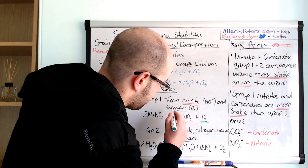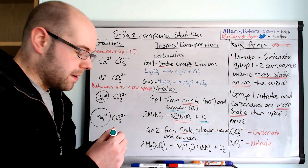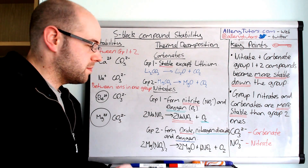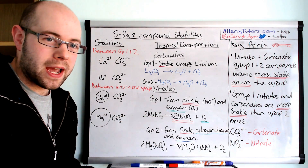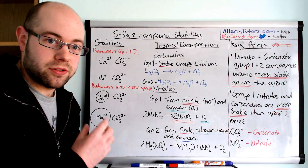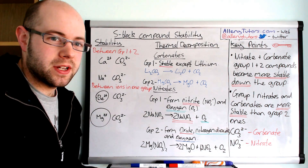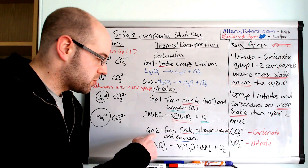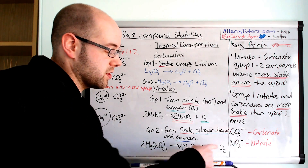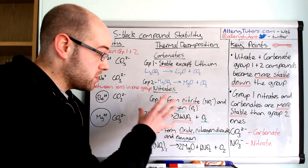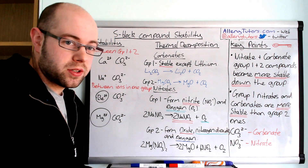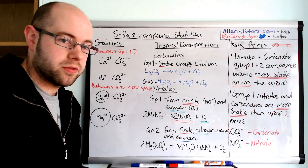There is an exception again — lithium. When you heat lithium nitrate, because lithium can distort electrons more than any other group 1 element, it behaves as if it were a group 2 element. You actually form an oxide, nitrogen dioxide, and oxygen. So for lithium nitrate, the products are the same as for group 2 nitrates, which we'll go through now.